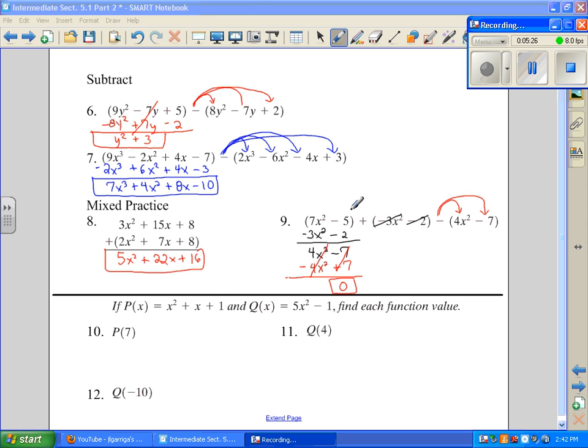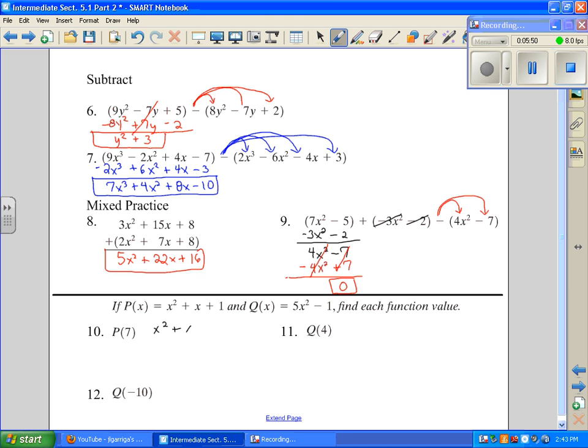Our last and final section is going to be when they give us a function P of x, which is this, and a function Q of x, which is this one, they ask us to make substitutions. They say when you enter this in the P of x function, when you plug 7 in for x, what's your solution? The P tells me to use this P function, which is defined by x squared plus x plus 1. Now if I put a parenthesis everywhere x is at, and now they ask me to substitute 7 everywhere x is at. So I'll go back and put a 7. 7 squared is 49 plus 7 plus 1, and that's going to add to be 57. So P of 7 is 57.